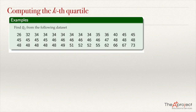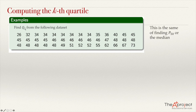For example, if we have this data set — and there are 42 data in this data set — the data is already ordered from the lowest to the highest value. If we want to compute quartile 2, we are going to compute percentile 50, or the median. Remember, the first step is to order the data, but the data is already ordered here. The second step is to find the position or index — the position of percentile 50.